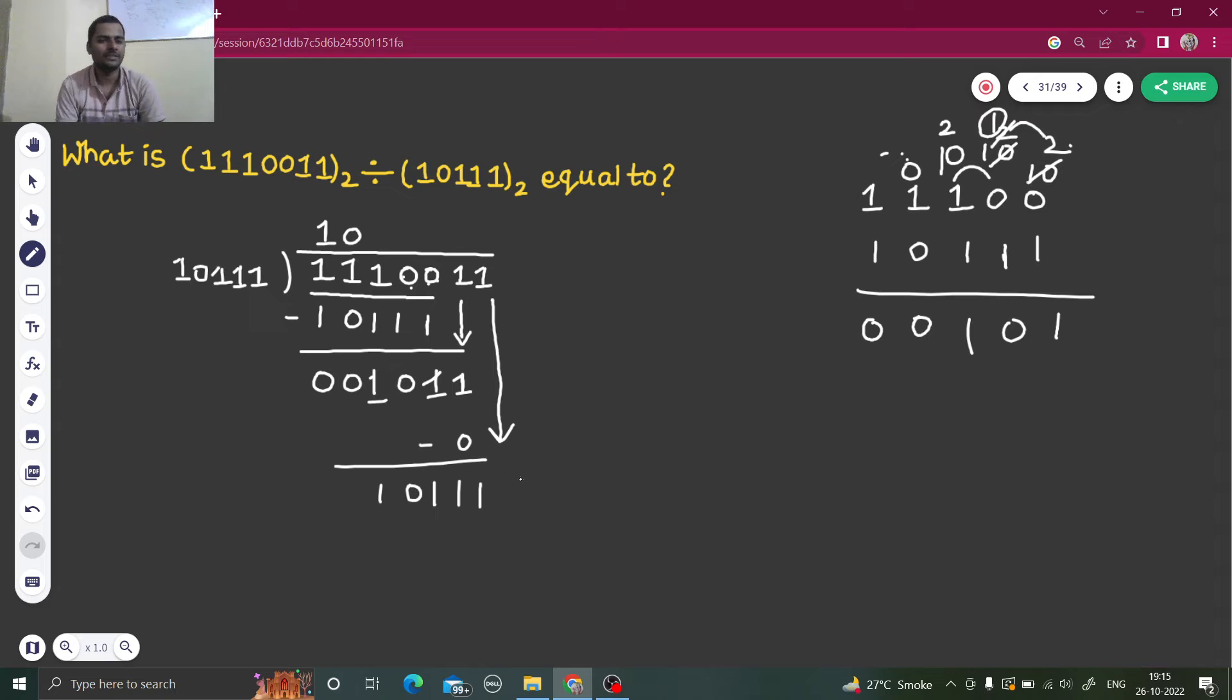Now this can be divided in one time. So one, zero, one, one, one, one, one, one, one. And this gets cancelled, zero, zero, zero, zero, zero.